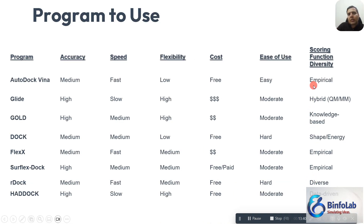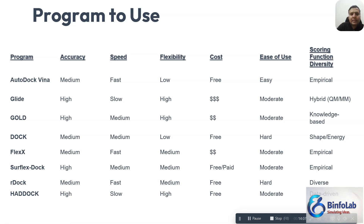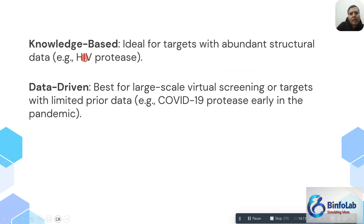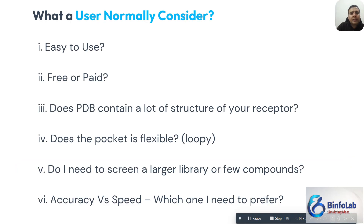So now it will be easier to decide. If you have the money, you can use Glide, GOLD, or Flex. For free options, look at the scoring function of those programs and check which protein you are dealing with in the PDB. In my view, knowledge-based scoring is ideal for targets with abundant structural data. Data-driven is best for large-scale virtual screening or targets with limited prior data — for example, early in the COVID-19 pandemic.